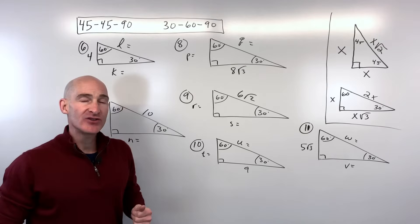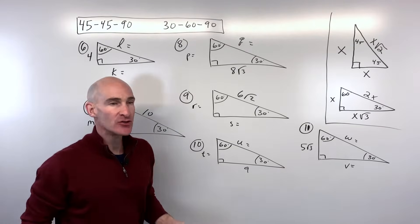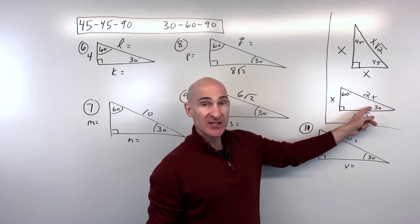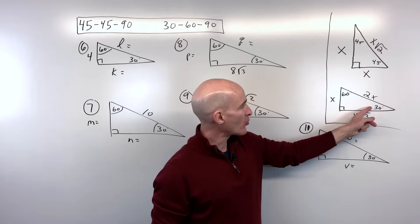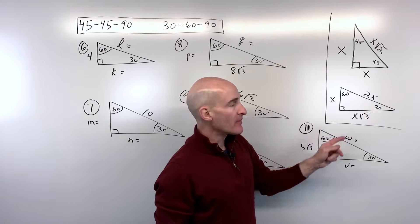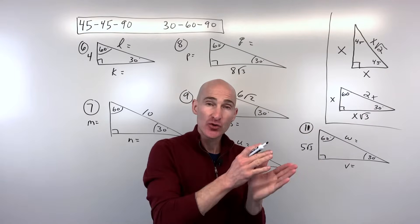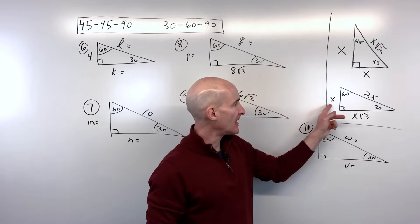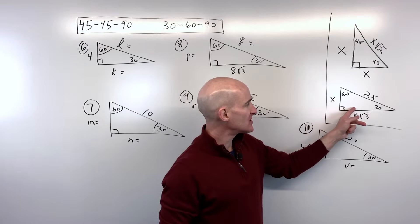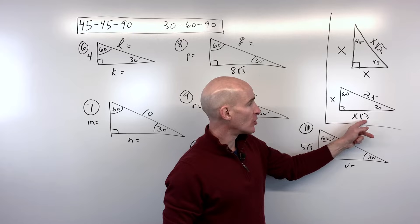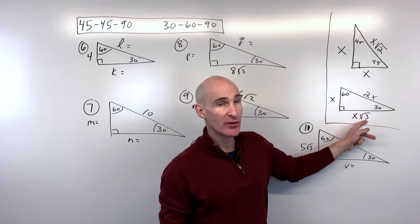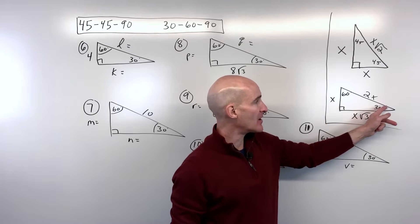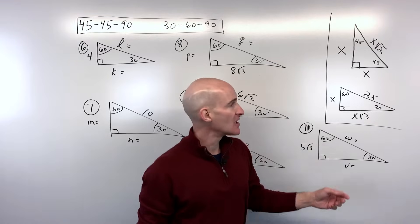Now the 30-60-90 triangle — a little more challenging but not too bad. Across from the 30-degree angle is the shortest side, the shortest leg, and we call that x. The one across from the 60-degree angle is the longer leg, x times √3. The one across from the 90 is the hypotenuse — the longest side — and that's 2x.